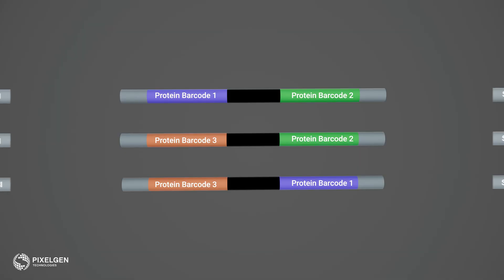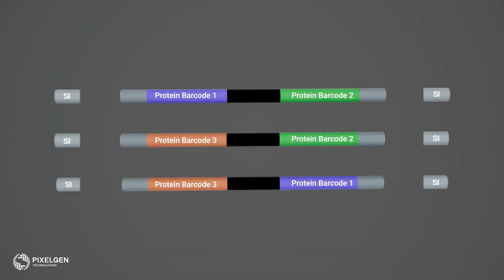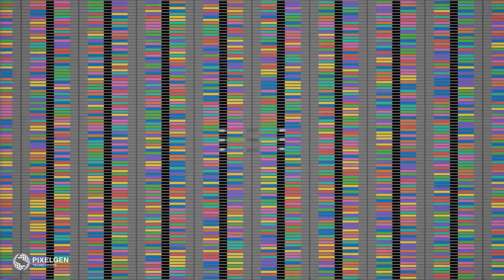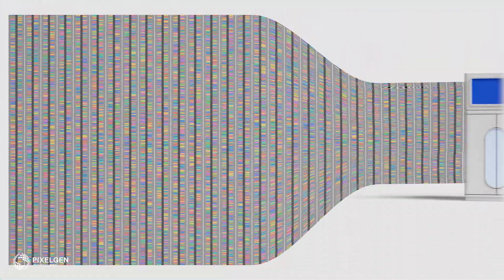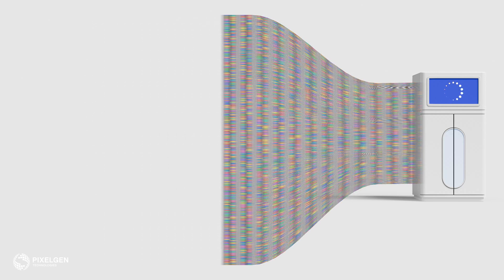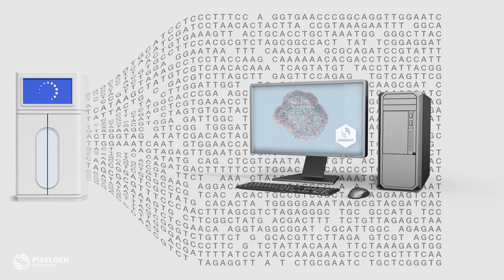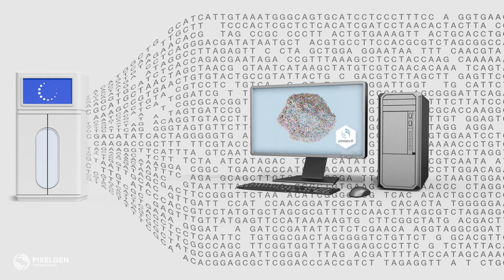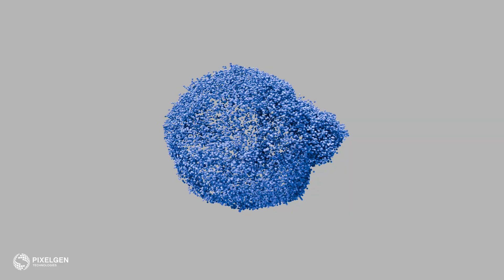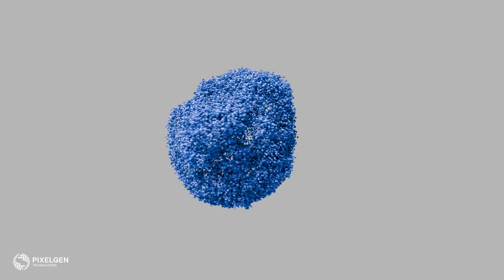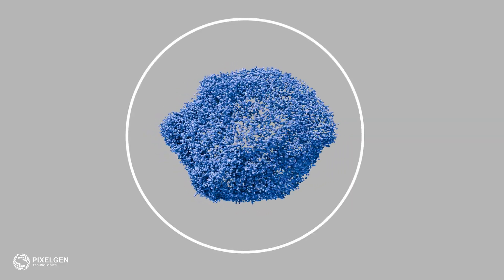After sample index PCR, the DNA fragment contains both sample indices and sequencing adapters. The DNA fragments are processed through next-generation sequencing, and the NGS output data is processed in our Pixelgen software to form a high-resolution graph network of the proteins of the cell surface.